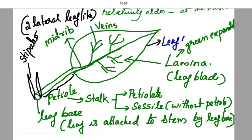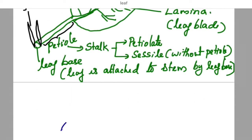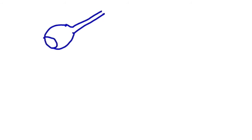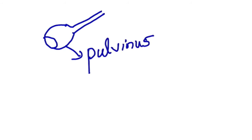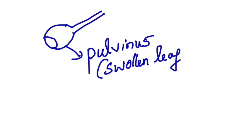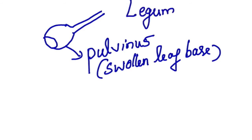You can see the leaf margin and leaf apex. In leguminous plants, the leaf base is solid and is called pulvinus. Pulvinus means solid leaf base. This is a characteristic of family Leguminaceae or leguminous plants.